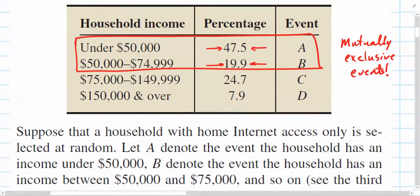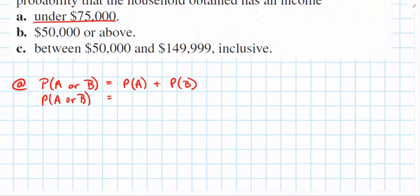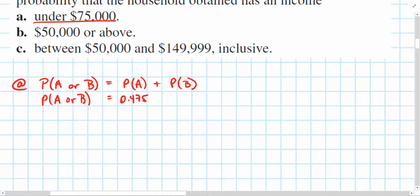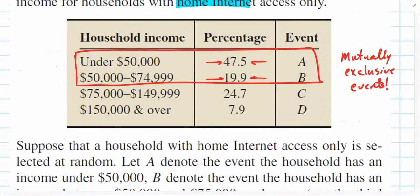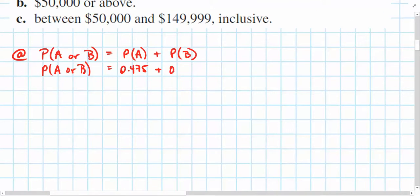So for Part A, I would write a solution like this. The probability of event A or B occurring is equal to the probability of event A plus the probability of event B occurring. Now this is what we're looking for. We don't know the probability of event A or B right now, but we can find it. Because we do know what the probability of event A is, that's this 0.475. And we do know what probability of B is, that's this one, the 0.199. Notice I'm not using the percentages here, I'm using the probabilities that are equivalent to those percentages.